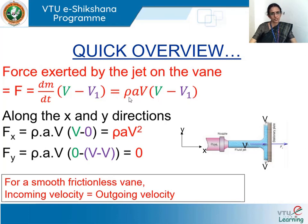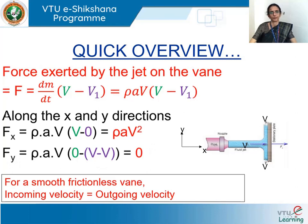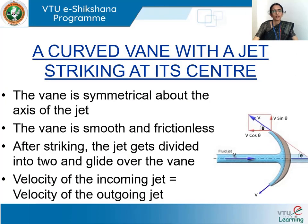This can be written as ρAv(v - v₁), where ρ is the mass density of the fluid, A is the cross-sectional area of the jet, v is the initial velocity of the jet from the nozzle, and v₁ is the velocity leaving the vane. Extended to x and y directions: Fx = ρAv² and Fy = 0.